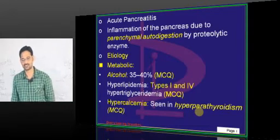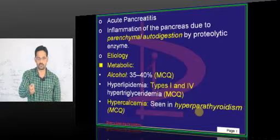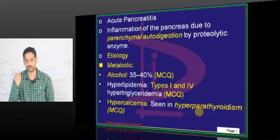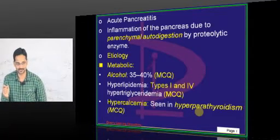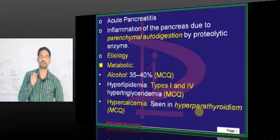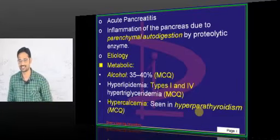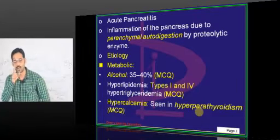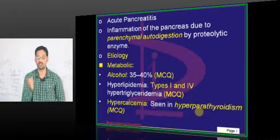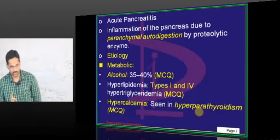Now, risk factors. The most common cause of acute pancreatitis is gallstones. The most common cause of chronic pancreatitis is alcohol. We often think alcohol for both, but for acute pancreatitis it is gallstones.